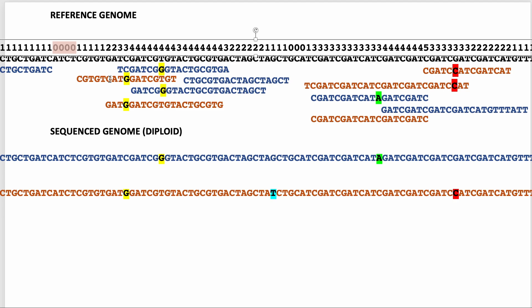These base pairs are covered once, these are covered twice, this one is covered three times, these are all covered four, and so on. There's another gap — a set of zeros — where coverage is absent. In places with zero coverage, no reads from the target diploid genome could be mapped to the reference. The reason is simply that it's random: it's not because something about that particular region is recalcitrant to sequencing — it's just that no random fragments happened to cover that area.